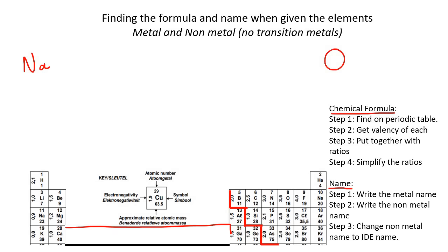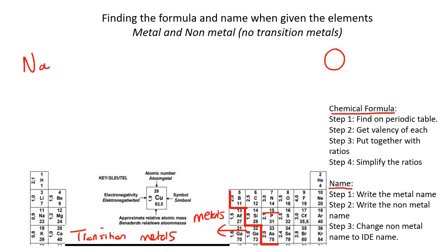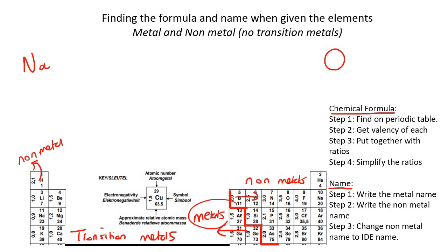We're not going to look at the elements I've blocked out — those are called the transition metals, and we'll look at them in future lessons. Everything on the left-hand side of the staircase is metals, and everything to the right is non-metals. Just keep in mind that hydrogen is not a metal — it's also a non-metal.